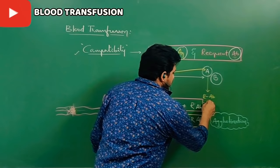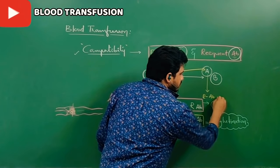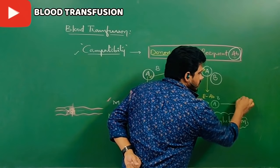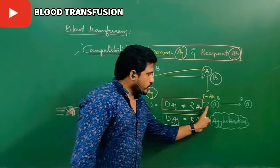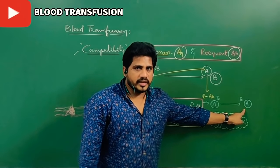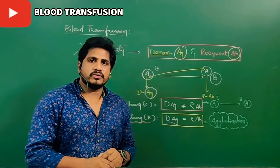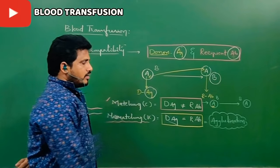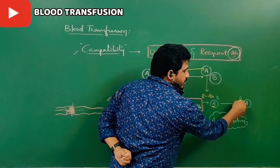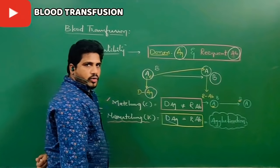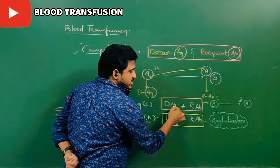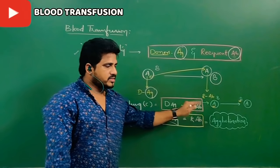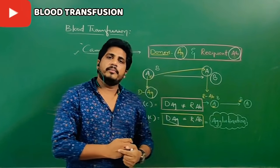For example: A blood group person has B antibodies and is donating to another A blood group person who also has B antibodies outside. Donor's antigen is A, recipient's antibody is B. Is A equal to B? No. So A is not equal to B — that means it is matching. Therefore, an A blood group person can donate blood to an A blood group person.